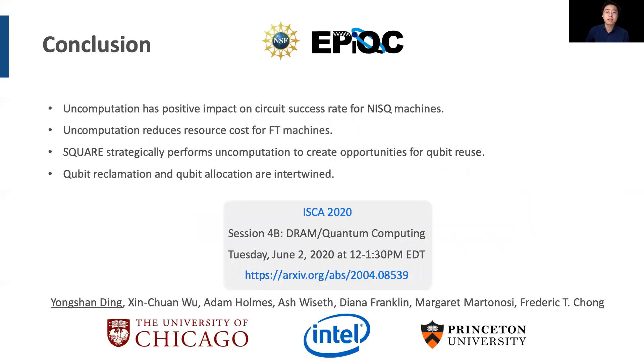To sum up, we present a systematic study on the impact of uncomputation on circuit success rate for NISQ architectures and on resource costs for fault-tolerant architectures. Square is a heuristic algorithm for strategic qubit allocation and reclamation under realistic constraints, such as qubit decoherence, gate noise, and communication. Our paper will be presented at ISCA 2020, session 4B. We look forward to seeing you there. Thank you.